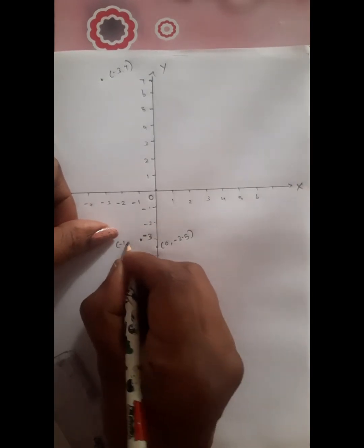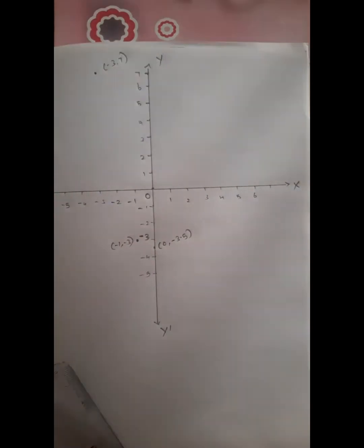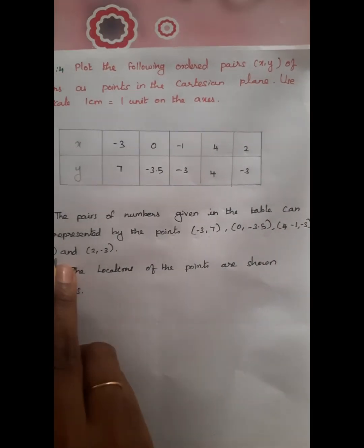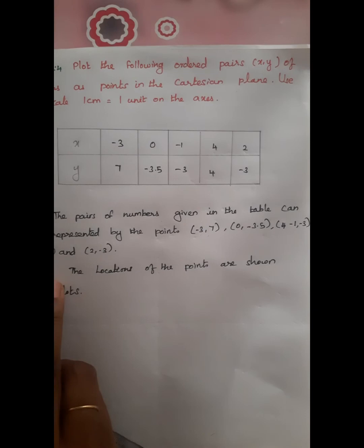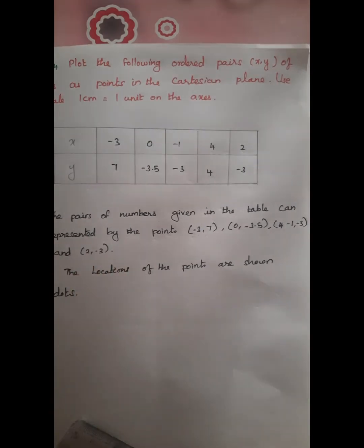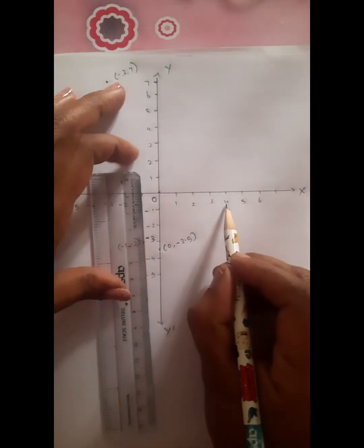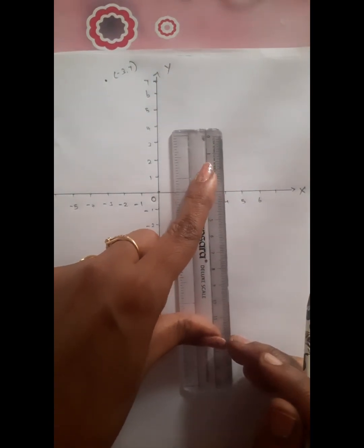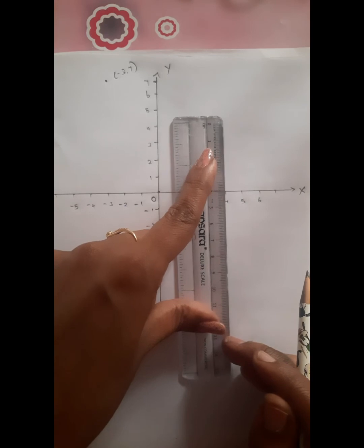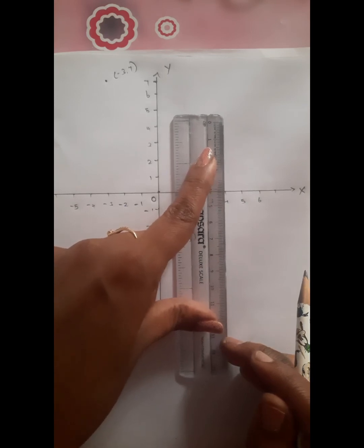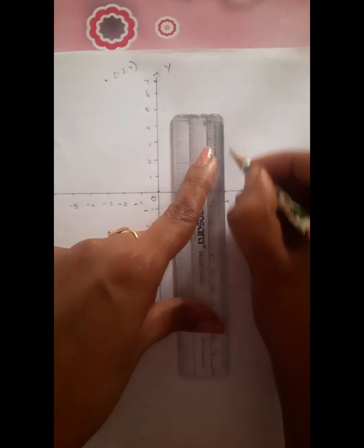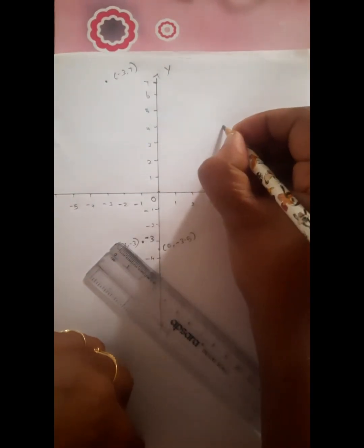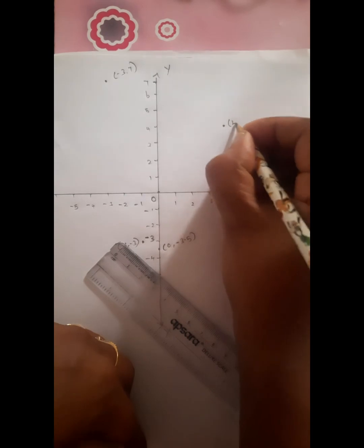Now plotting the point (4,4): both are positive, so this is in the first quadrant. The x-axis is 4 units and the y-axis is 4 units distance. This gives us the point (4,4).